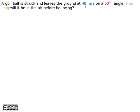A golf ball is struck and leaves the ground at 48 meters per second on a 60-degree angle. How long will it be in the air before bouncing?